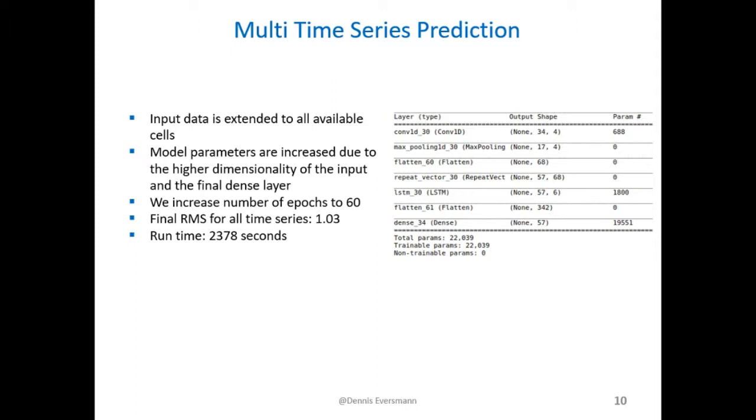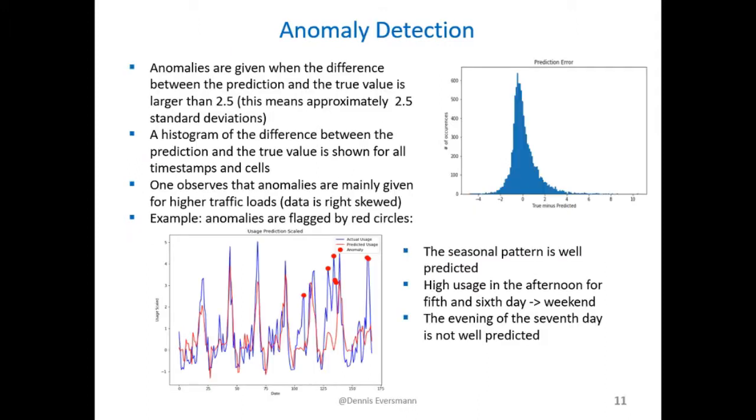The results of the multi-series CNN LSTM autoencoder model was an RMS of 1.03 with a runtime of more than 2000 seconds. After the prediction of all time series, we can now detect anomalies given in the cell usage of the LTE cells.